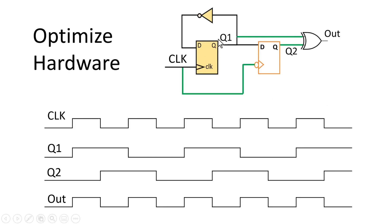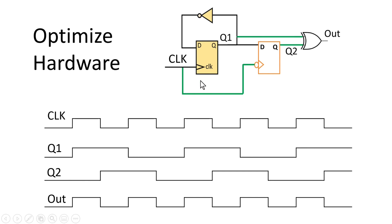The final circuit has a clock divider working at the positive edge of the clock, whose output q1 feeds into a negative-edge-triggered flip-flop. The outputs of both flops are fed to an XOR gate to produce the final output. q1 toggles at every positive edge of the clock.